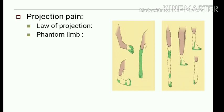The next variety is projection pain. By the law of projection, when the pain pathway is stimulated anywhere, the conscious sensation is felt at the site of the receptors. For example, if a limb is cut and the pain pathway is stimulated, the person feels pain at the area where the receptors were located. This is the mechanism for projection pain seen in cases of phantom limb. This concludes the discussion on clinical types of pain.